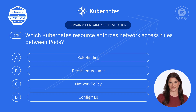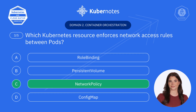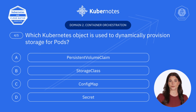Question three: Which Kubernetes resource enforces network access rules between pods? A. Role binding. B. Persistent volume. C. Network policy. D. Config map. Correct! It's C — Network policy. Network policy is like the security guard of your Kubernetes cluster, defining which pods can talk to each other.